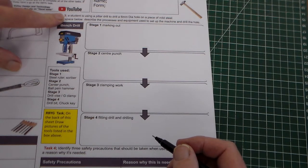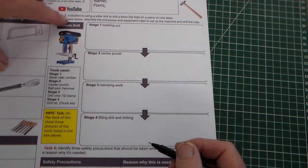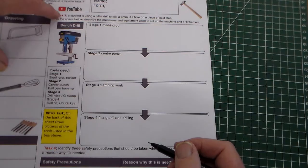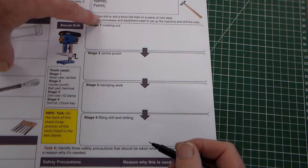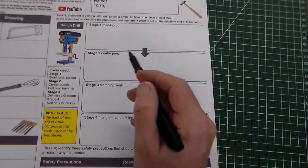It says a student is using a pillar drill to drill a 6mm diameter hole in a piece of mild steel. In the space below describe the processes and equipment used to set up the machine and drill the hole.